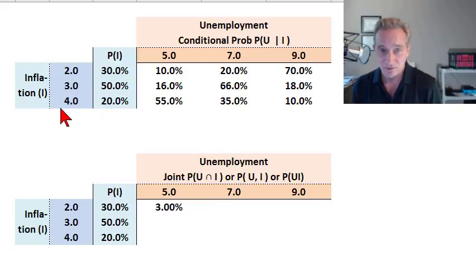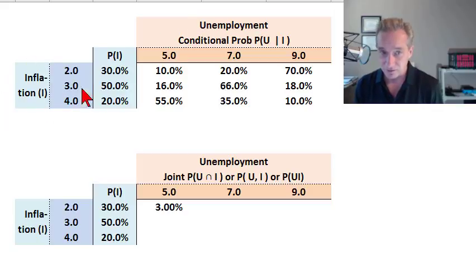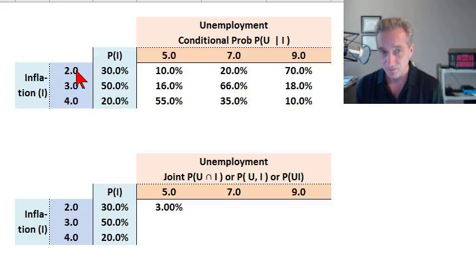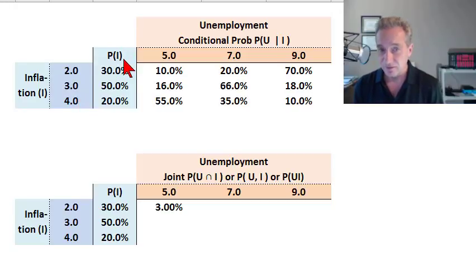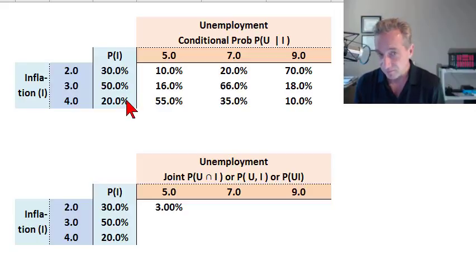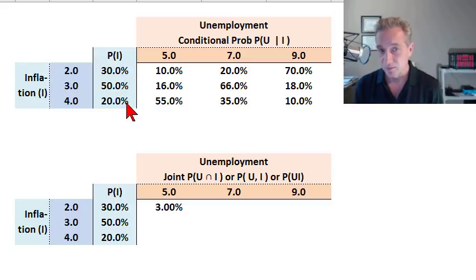I've assumed two different discrete random variables. Inflation is colored in blue and denoted with I — a discrete random variable with only three possible outcomes: two, three, or four percent. The unconditional probability that inflation is two, three, or four is respectively 30%, 50%, or 20%. These need to sum to 100%, as they do.